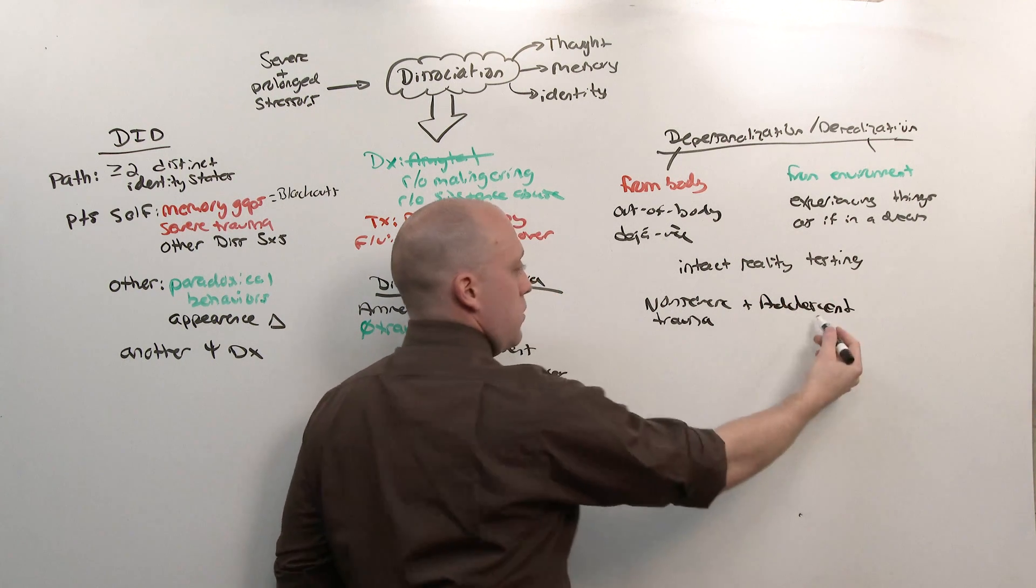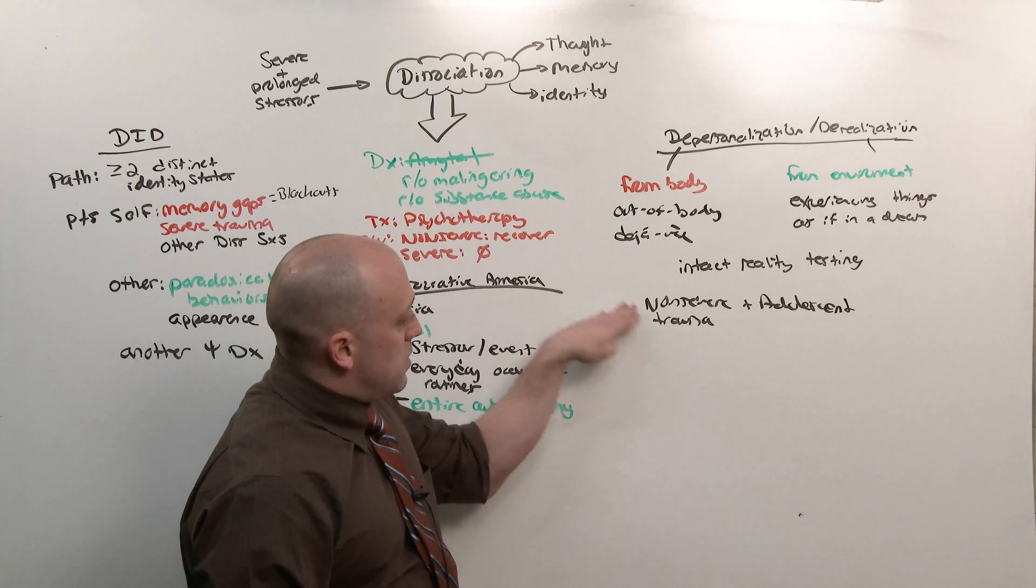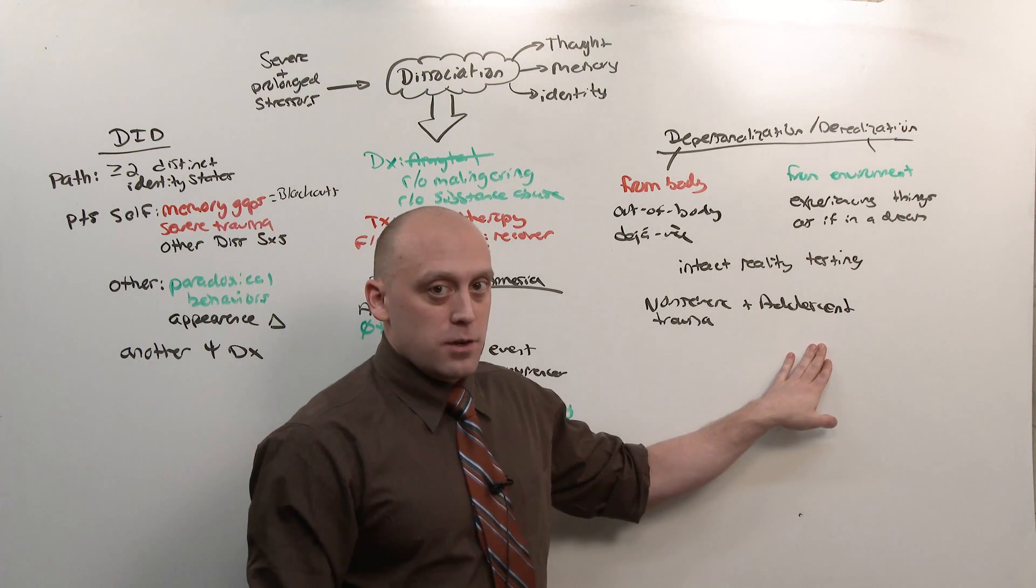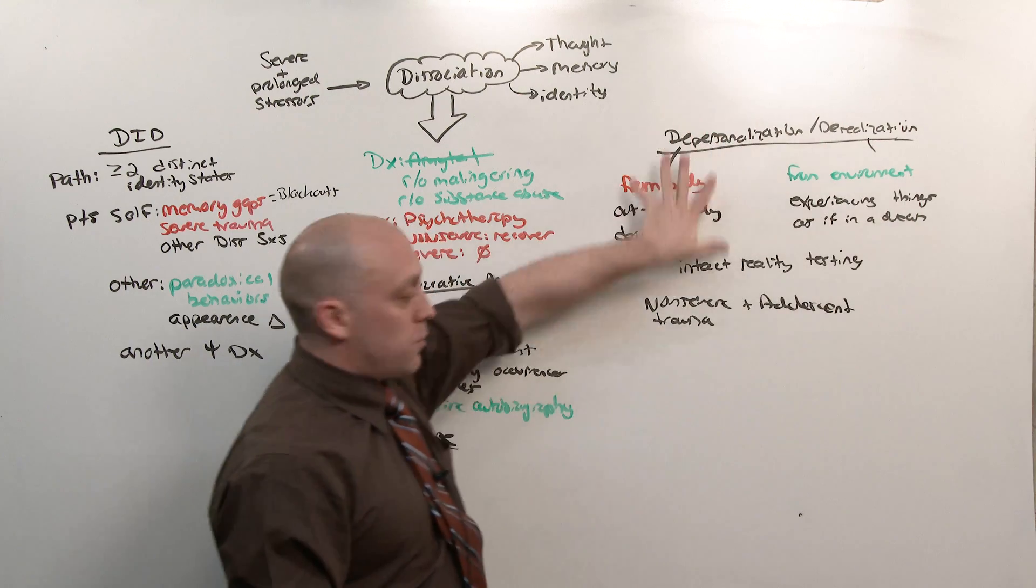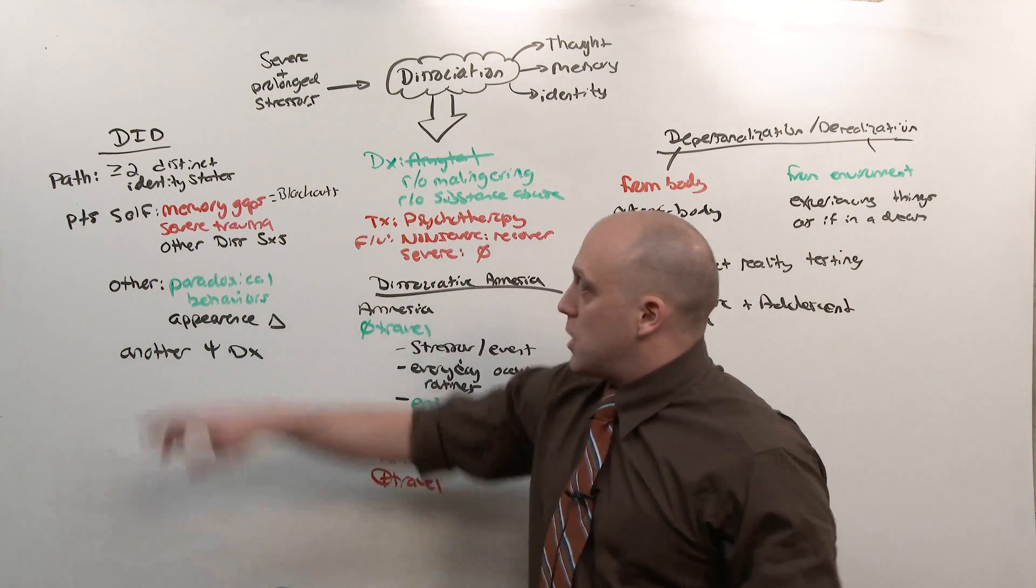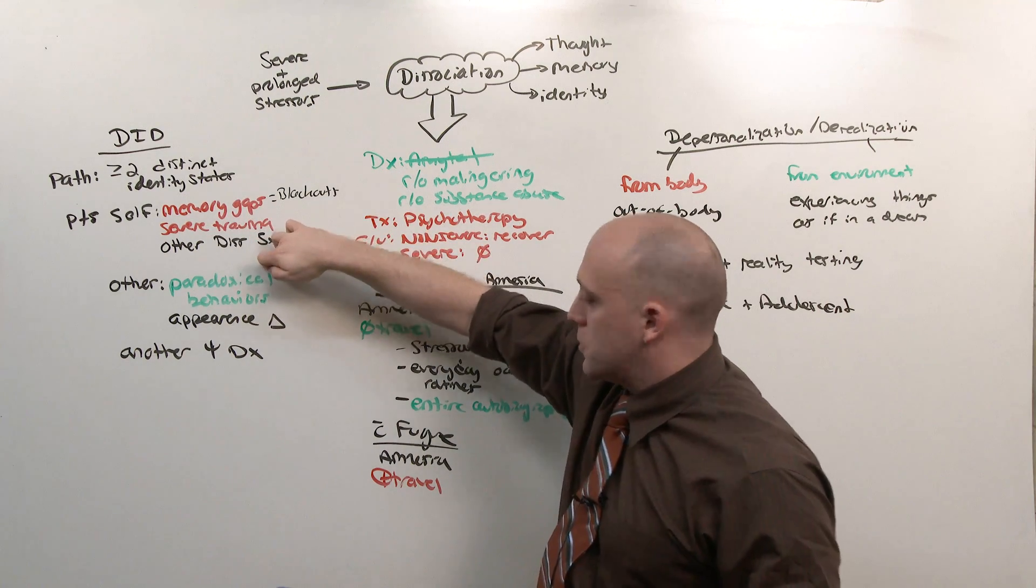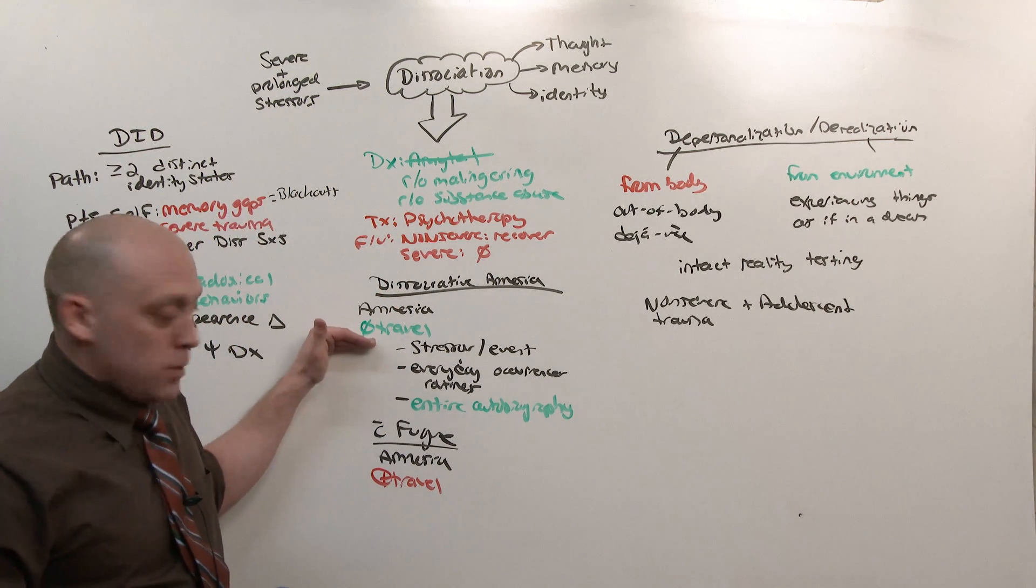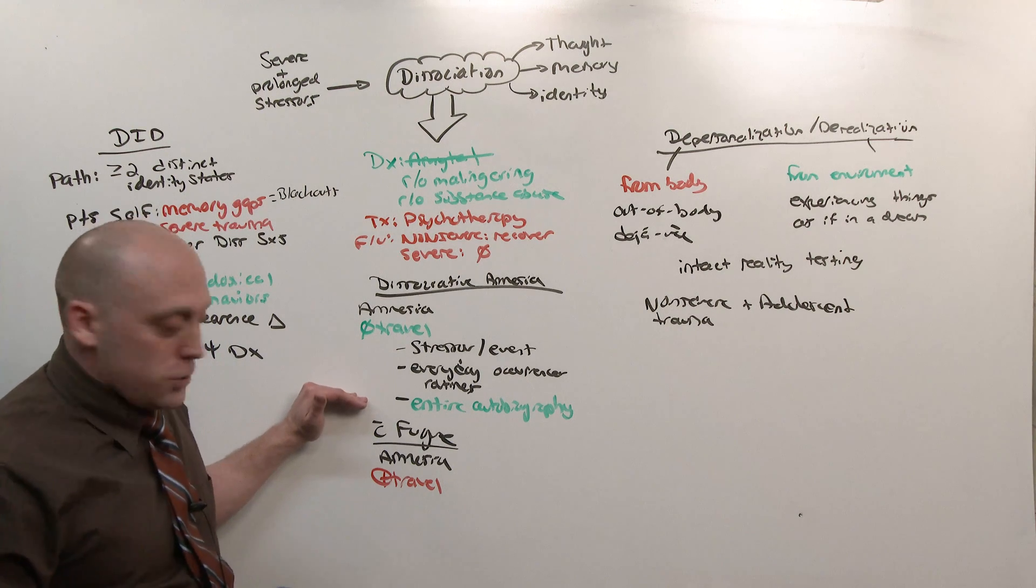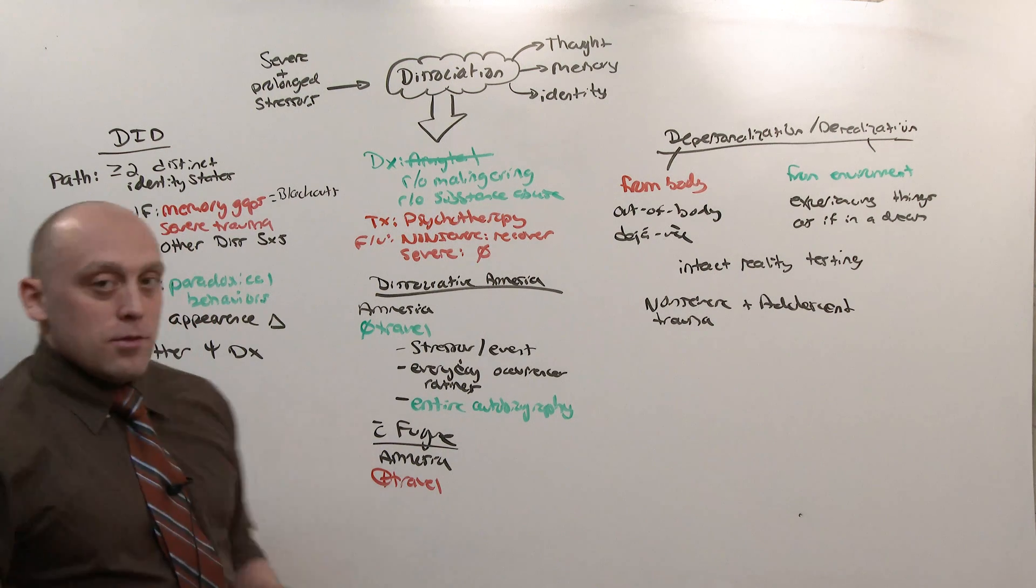So something that's relatively severe to the adolescent, got a C on a test, girlfriend broke up with them. That's the non-severe trauma, but relative to the adolescent, it's severe. And all they experience is this out-of-body stuff or experiencing things as though they're in a dream. This is usually a modifier of other diagnoses. Whereas dissociative identity disorder is very clearly two distinct identity states, memory gaps, paradoxical behaviors. And amnesia may occur in any level, stressor of the event, Law and Order Special Victims Unit, entire autobiography, Archer. And if there's travel, that is, with fugue, Jason Bourne. That is dissociative disorders.